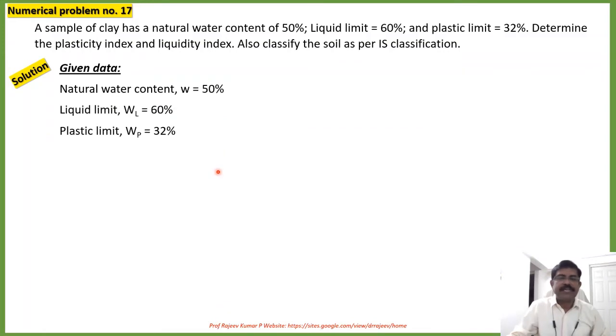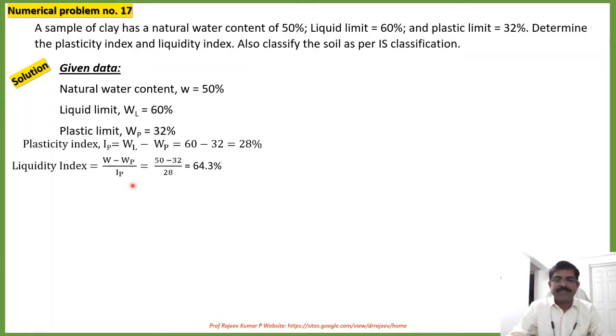From this data we can calculate plasticity index. Let us see how this can be done. The plasticity index can be calculated like this and its value is 28 percent. The expression for liquidity index is nothing but natural water content minus plastic limit divided by plasticity index. That will give you 64 percentage.